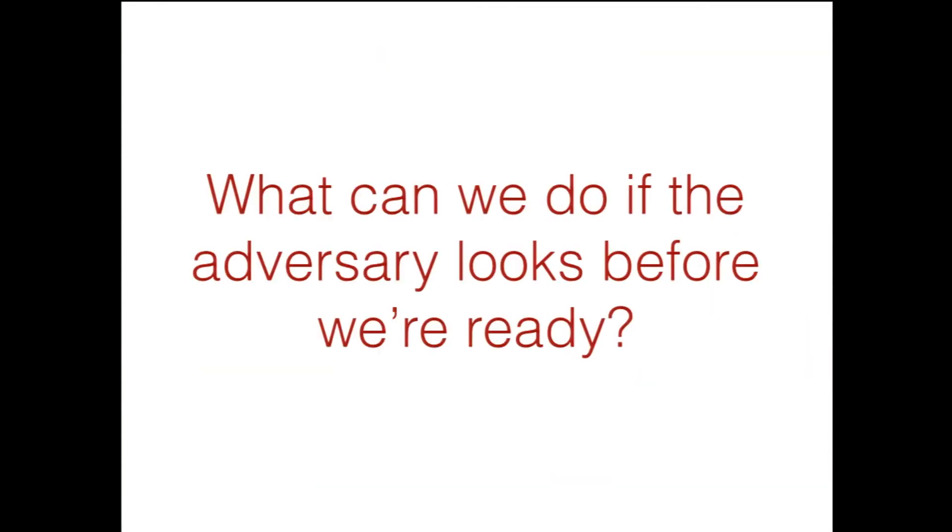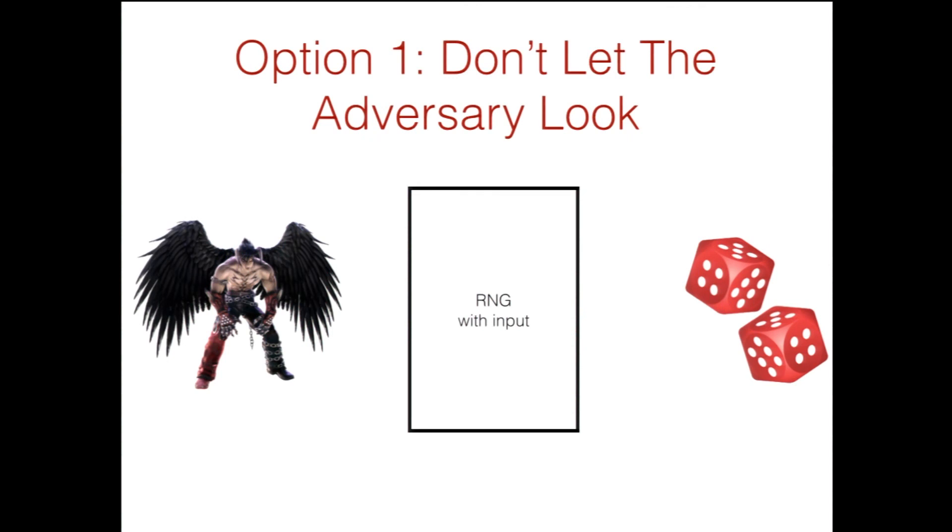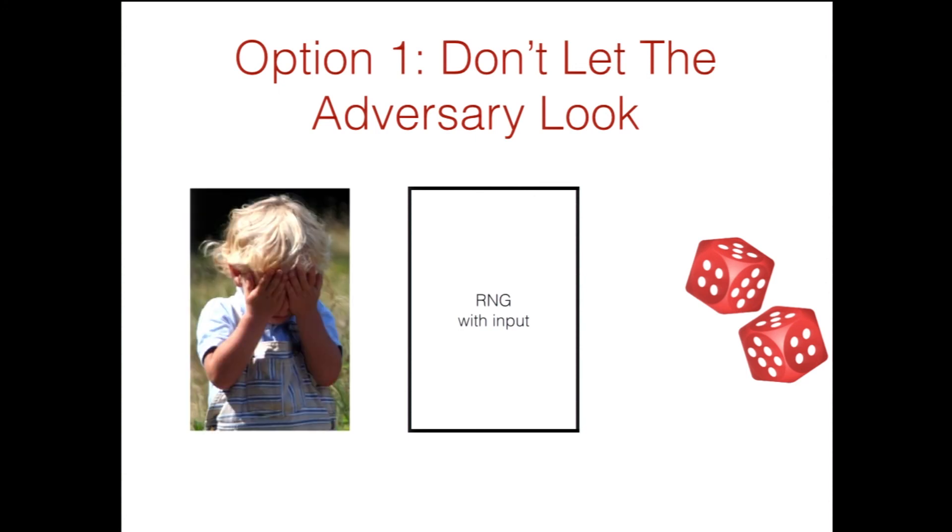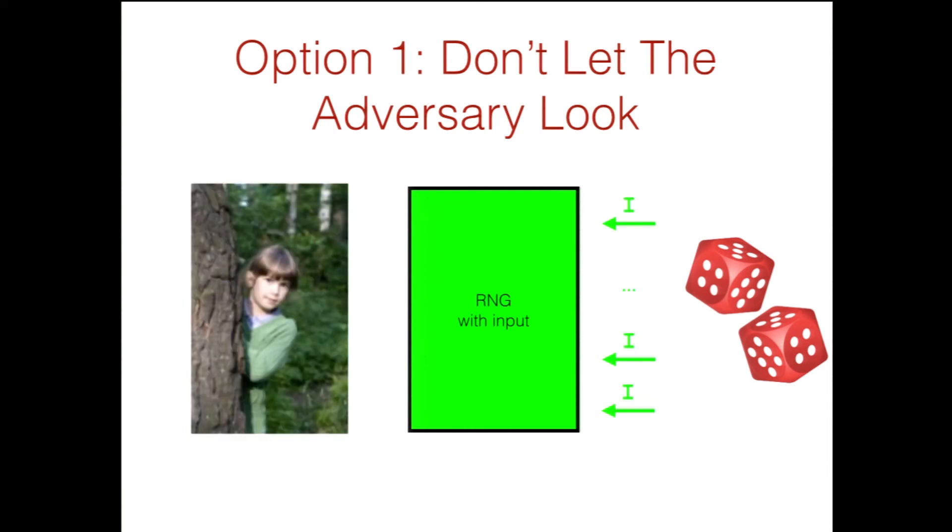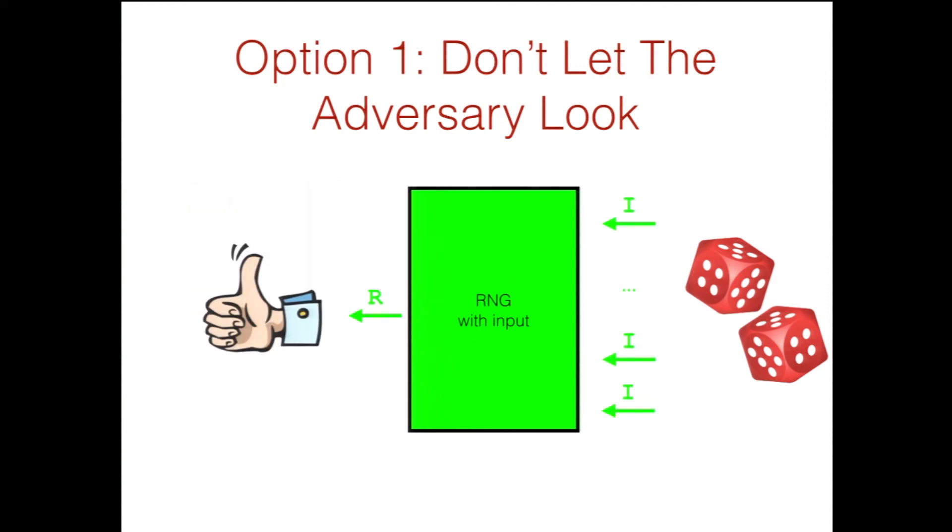So the question is, what can we do if the adversary looks early? The first answer you might come up with is just don't let him. In this case, the adversary simply promises that he won't look until we're ready. Then we'll receive a bunch of inputs. We'll accumulate some entropy. After we've gotten enough, the adversary will peek out from behind his tree, and then we'll have accumulated enough entropy so we'll be secure. We'll have pseudorandom bits. So that's wonderful. This is roughly, well, it's a caricature of the solution of Dotis et al. They didn't solve this problem. So this is roughly the model that they used.